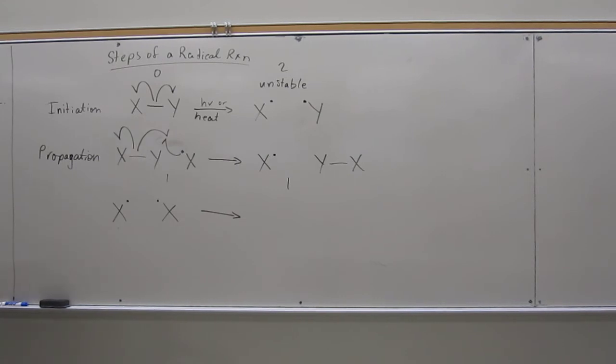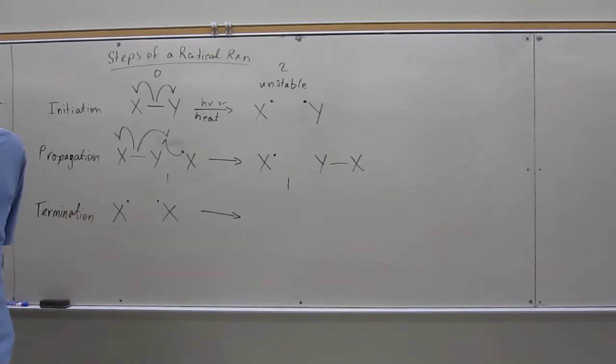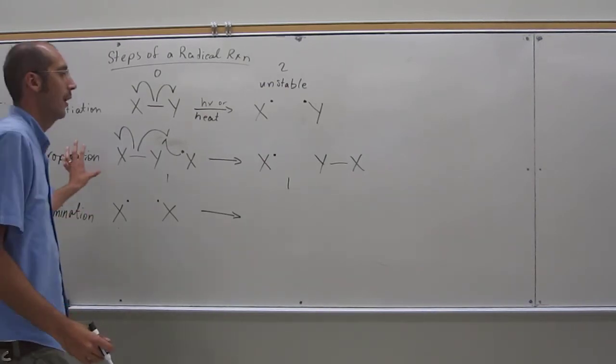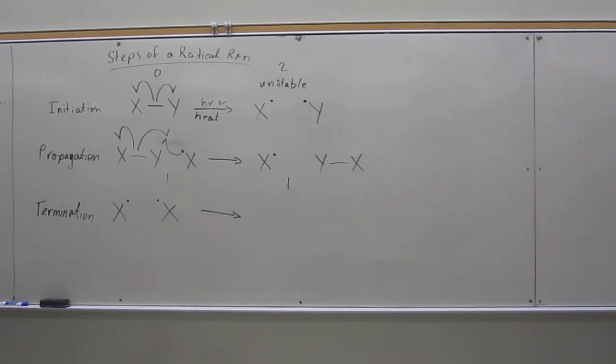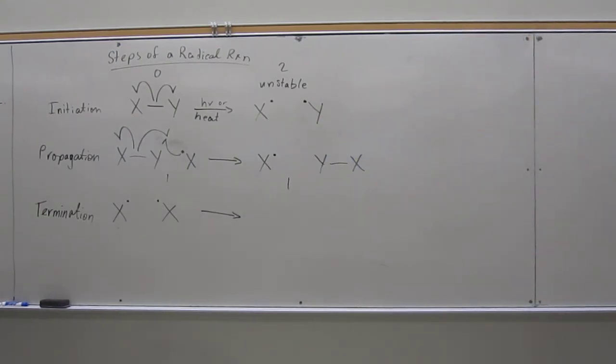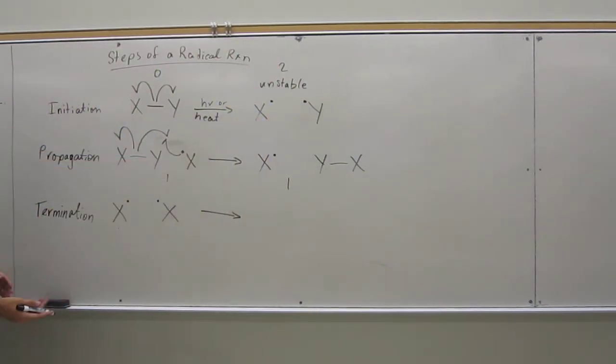And then termination steps don't happen very often, just at the end of the reaction. So this is a very small amount. This happens just at the end of the reaction. This happens most of the time. So everything's reactive. It's like what we call a chain reaction. So once you start a radical reaction, you can't stop it, because the things are so reactive.